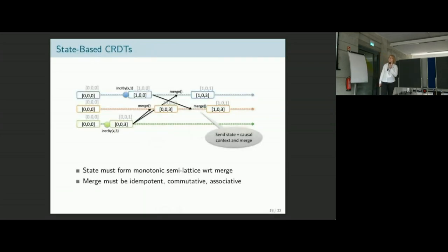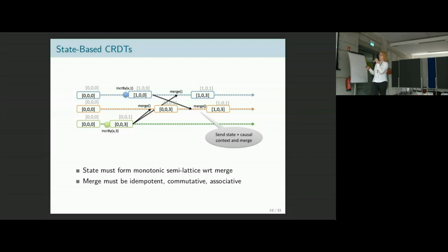The other flavor is state-based CRDTs. In state-based CRDTs, we don't send the update but send a state over to another replica and merge the corresponding states together. A typical example is a counter where you have one entry for every replica. If you increment on replica one, you work on that first entry. If you forward it to another replica that has value 003 and do a point-wise merge on the different entries, the value becomes 103. If you ask what the value is, you add up all entries and get four increments.